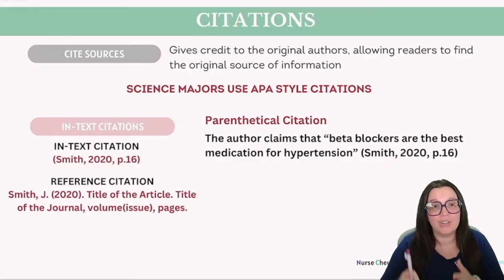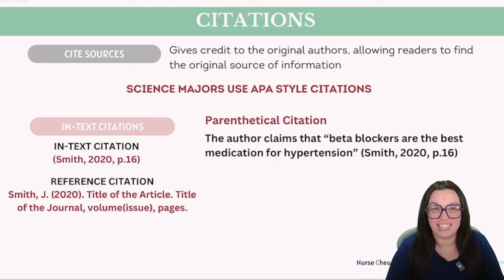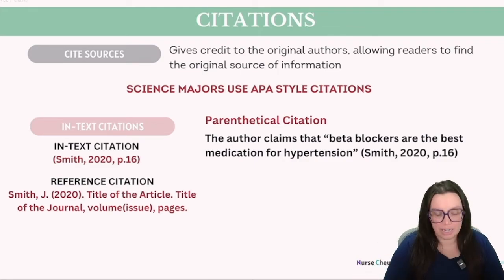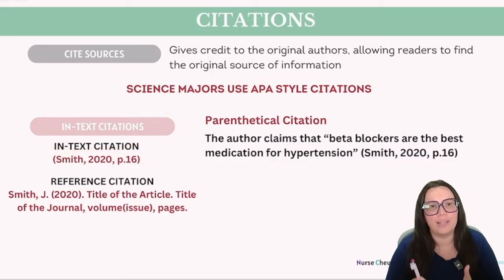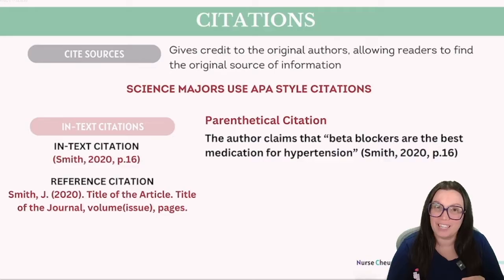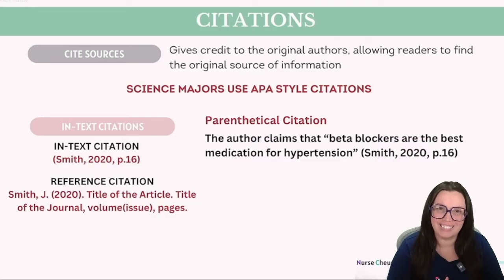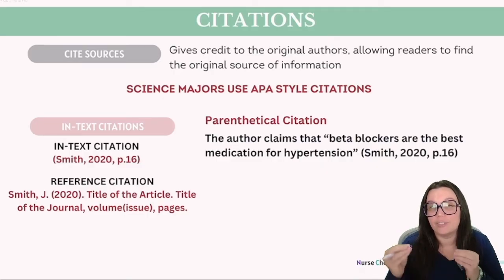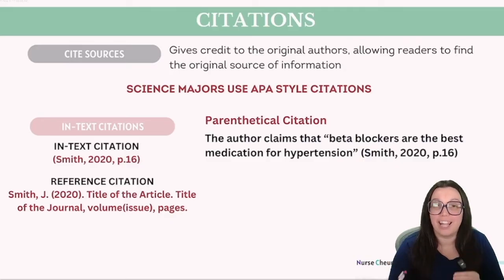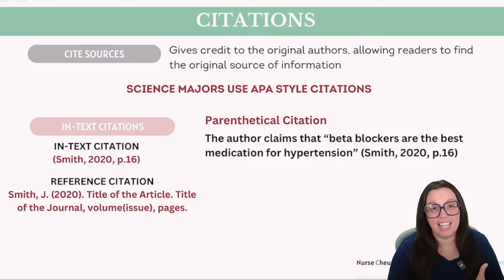It's also important to accurately cite your sources, giving credit to original authors and allowing readers to find the original source of information. In science, we use APA style for citations. Starting with in-text citations, this is a brief method of acknowledging the origin of specific information, guiding readers to the matching entry in the reference list. This citation typically includes the author's surname, the year of publication, and when referencing a particular segment, you may specify the page number or another identifier like a timestamp, paragraph number, or heading. When the citation refers to the source in its entirety, page numbers are not necessary.